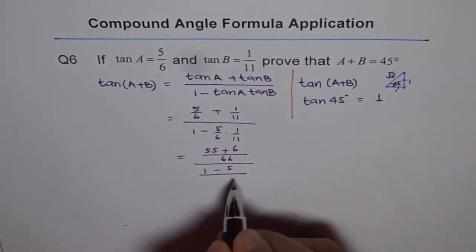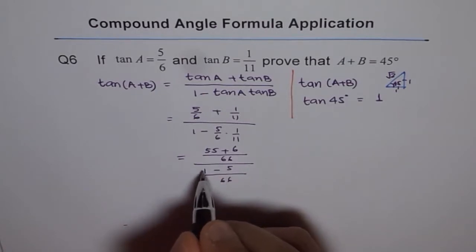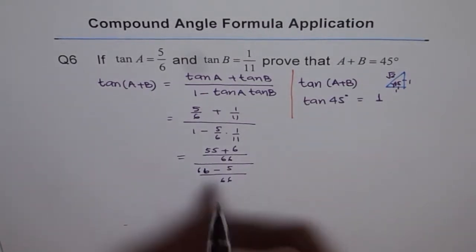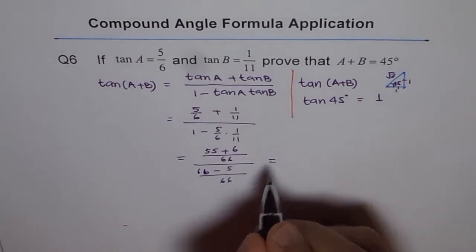So we can take common denominator here also, 66 and this will be 1 times 66 as 66. Let's write 66.